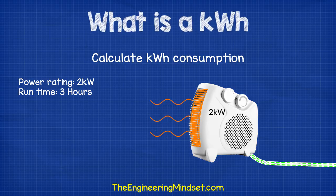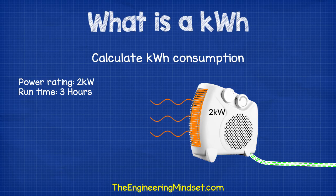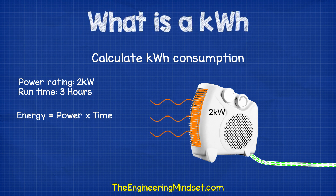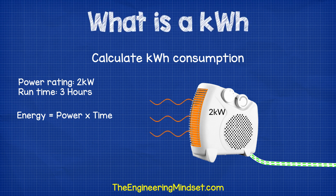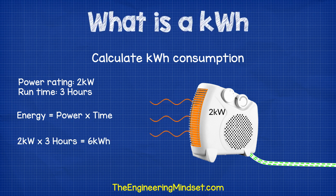Now back to the heater — we want to know how many kilowatt hours this will use. We know we can use the energy formula, which is energy equals power multiplied by time. We also know that the power is rated at 2 kilowatts and that this will run for 3 hours. So 2 kilowatts multiplied by 3 hours equals 6 kilowatt hours.